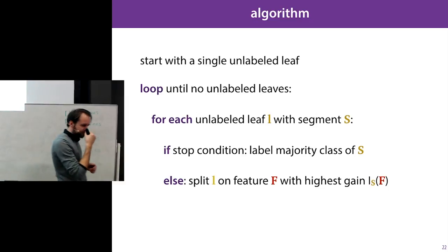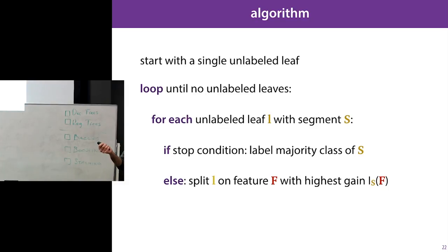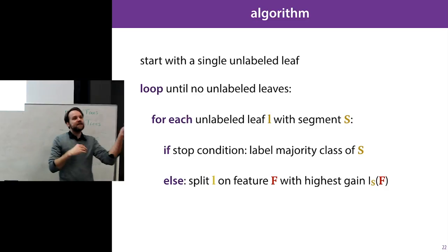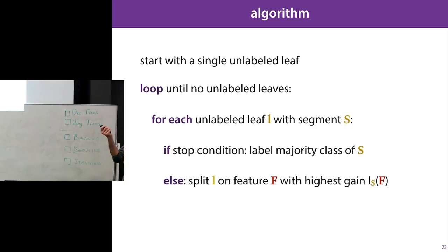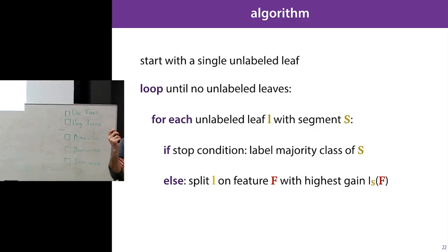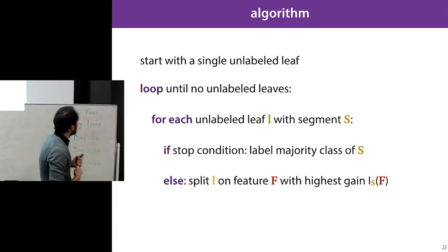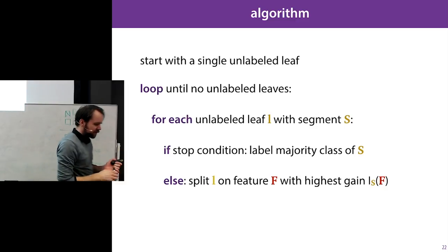Practically, the ID3 algorithm is: start with a single unlabeled leaf (empty tree). Loop until no unlabeled leaves remain. For each unlabeled leaf with a segment: if the stop condition is hit, label it with the majority class of the segment. Otherwise, find all remaining features, split on the one with the highest information gain. Repeat until no unlabeled leaves remain. That's everything for classification decision trees.